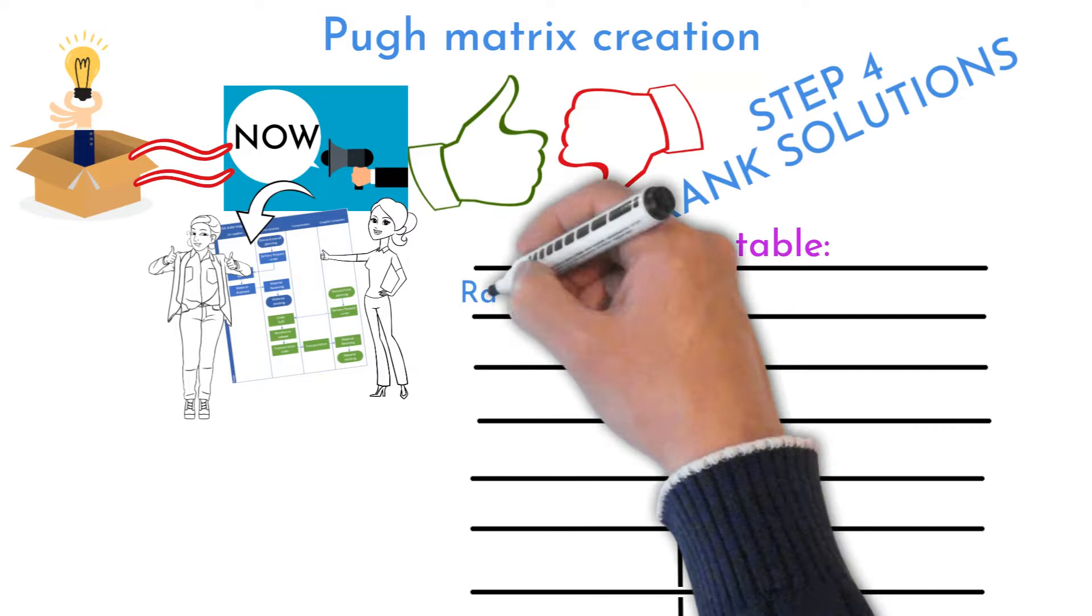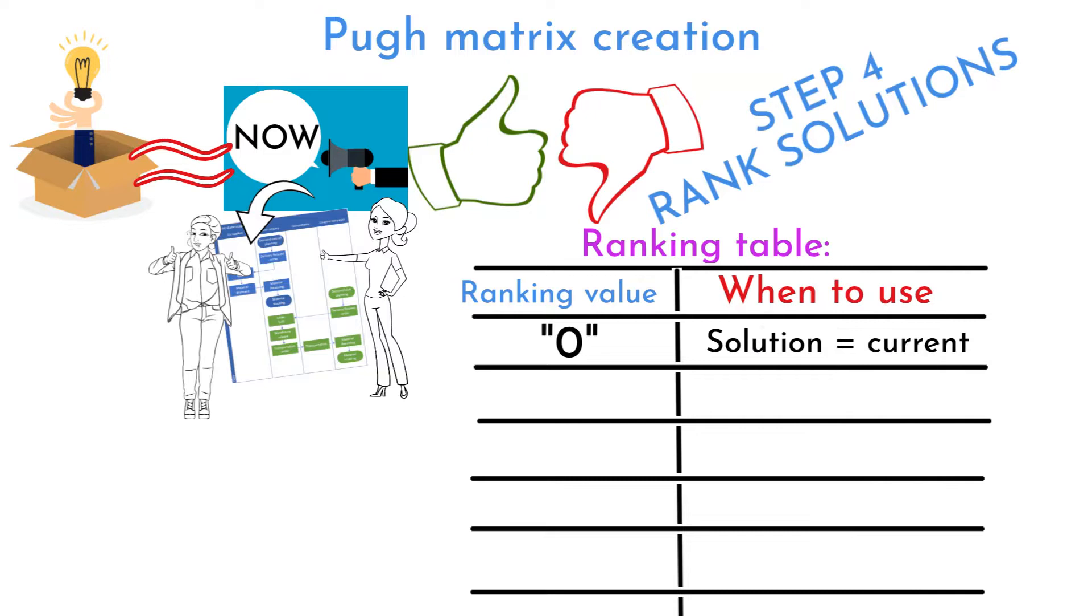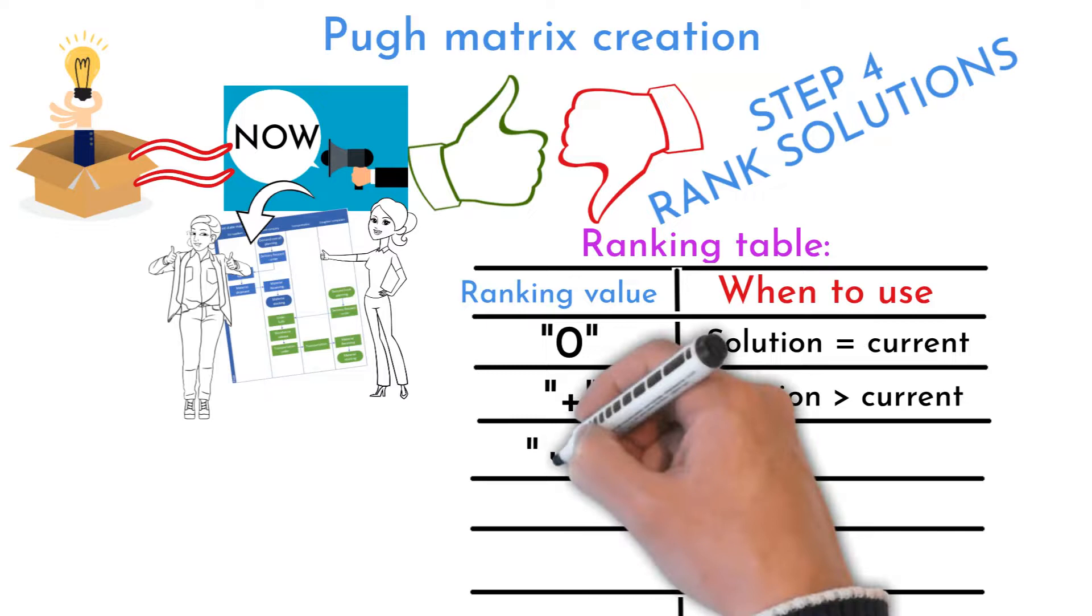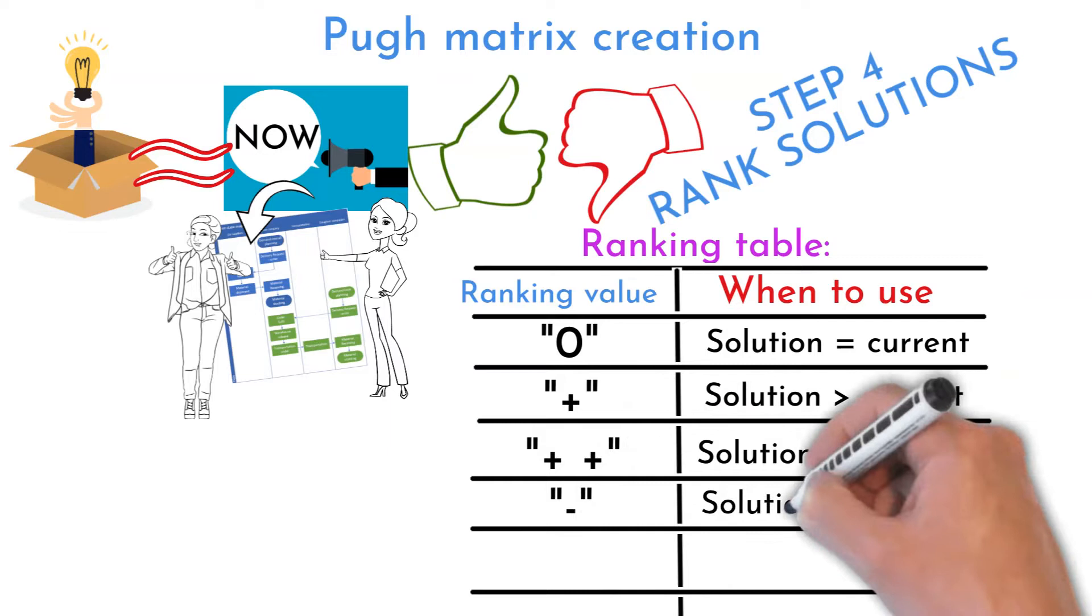This is how you can rank. Rank 0 if the solution criteria is about the same with compared baseline. Rank plus when solution is better than current state. Rank plus plus when solution is way better than current state. Rank minus when solution is worse than current state. Rank minus minus when solution is much worse than current state.